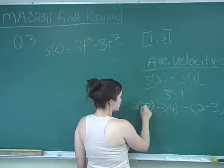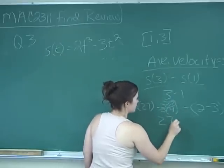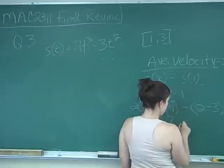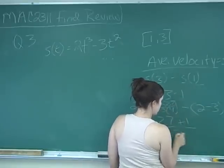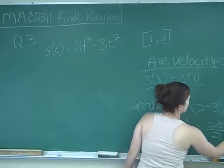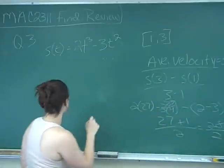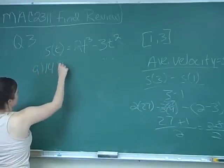So we get 2 times 27 minus 3 times 9, which is 27, minus 2 minus negative 3, which is negative 1, so it's plus 1, all over 3 minus 1, which is 2. So that's 28 over 2, which is equal to 14. So we've got our first part is 14 feet per second.